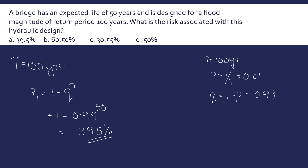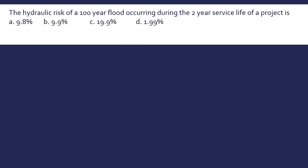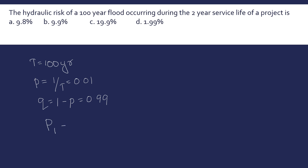Third problem: find the hydraulic risk of a 100-year flood occurring during a 2-year service life of a project. The service life is n = 2 years and T = 100 years. So P = 1/T = 0.01, Q = 1 − P = 0.99. At least once in 2 years: P₁ = 1 − (0.99)² = 1.99%. That is the answer.